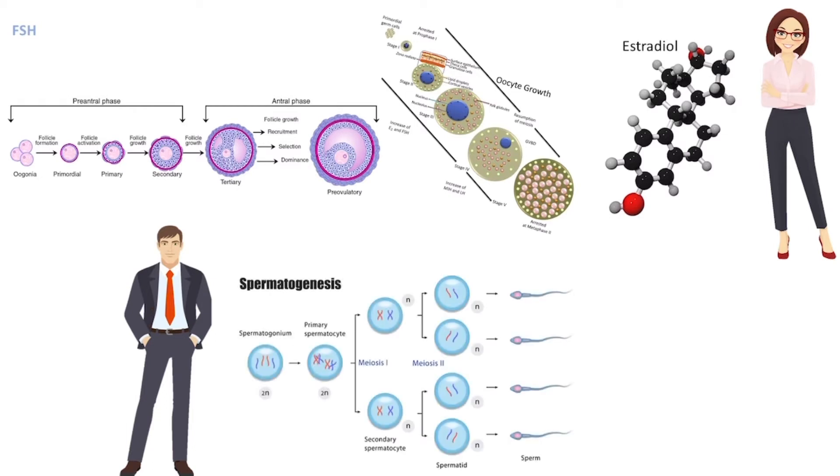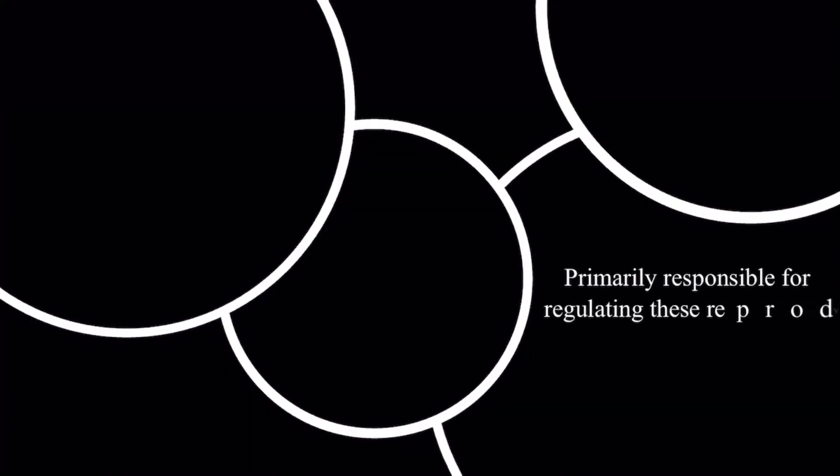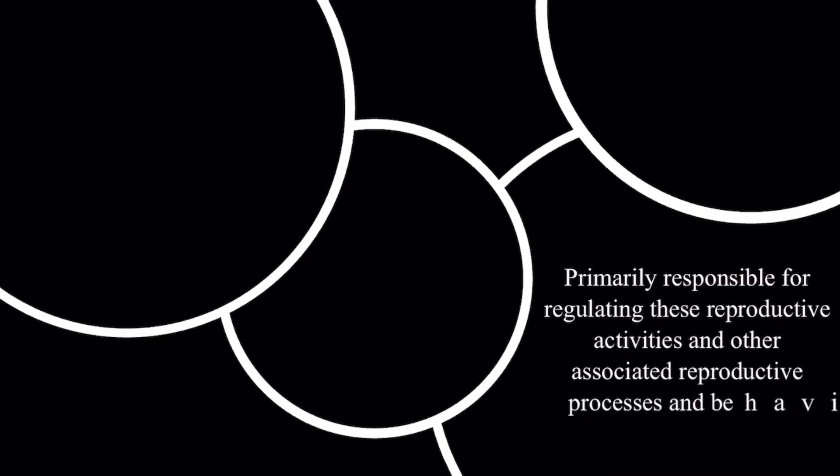The HPG axis is primarily responsible for regulating these reproductive activities and other associated reproductive processes and behaviors. Think mating behaviors.